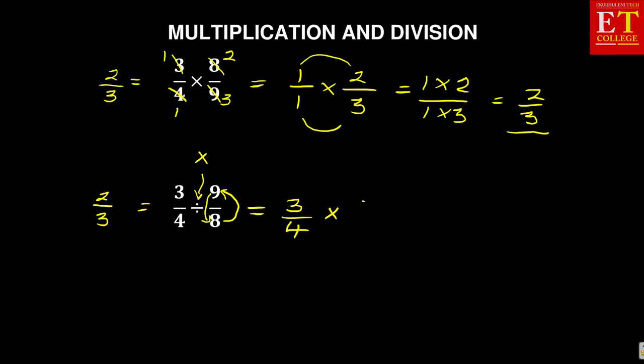So now you'll be having 8/9. From this moment, you can now do the same previous example that we did with multiplication. The 3 will cancel the 9 and the 4 goes into 8 two times. And then the answer also is 2/3.